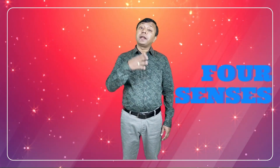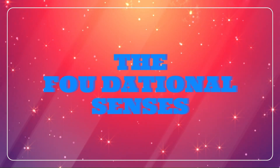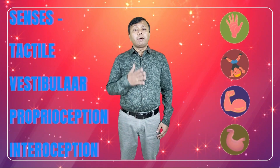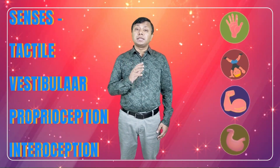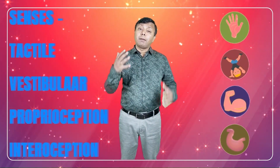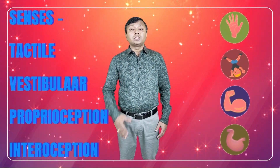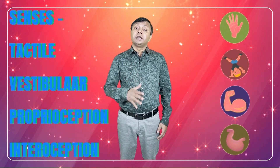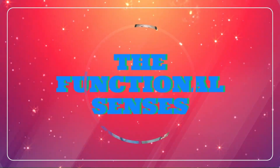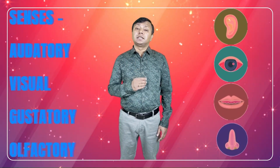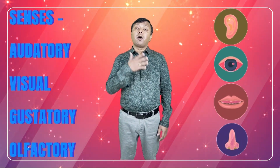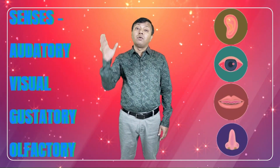Broadly, they are categorized in two types, each of them having 4 different senses. The foundational senses: our foundational or proximal sensory systems give us information about our body and are some of the earliest to begin developing in utero. The functional senses: our functional or distal sensory systems give us information about the world around us.